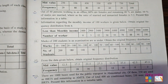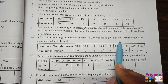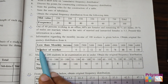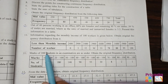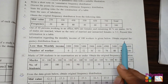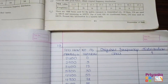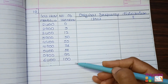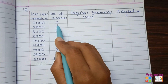Question number 10: Information regarding the monthly income of 100 workers is given below — obtain the original frequency distribution from it. The information is given about the less-than cumulative frequency. We need to prepare the original frequency distribution. In the table, write the less-than monthly income and the number of workers.